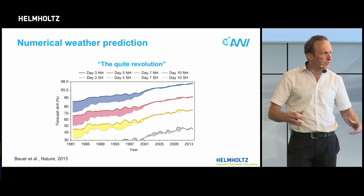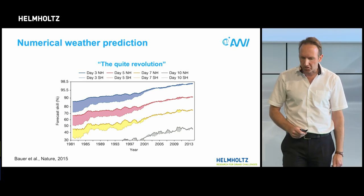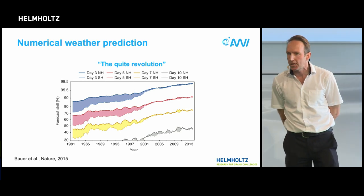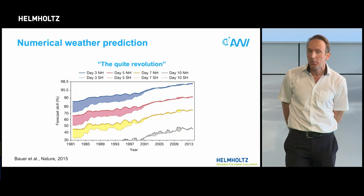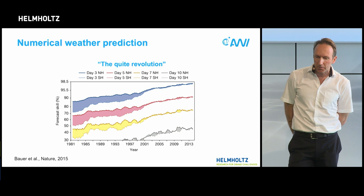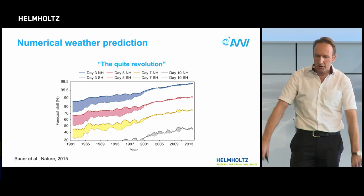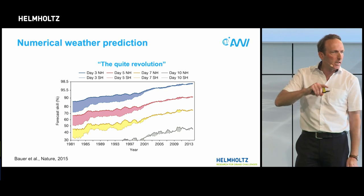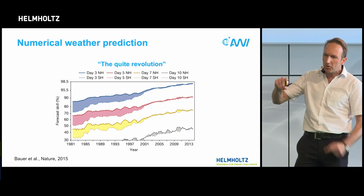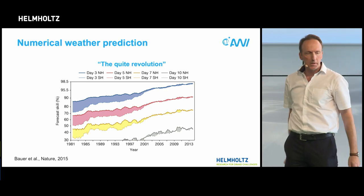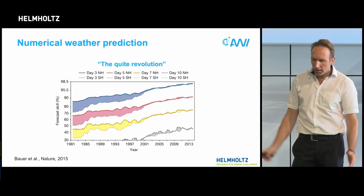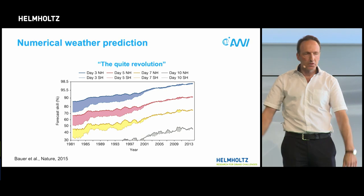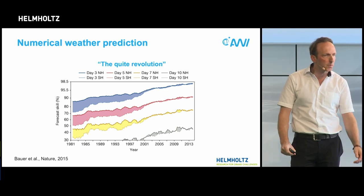There has been a story of success. This graph is from a paper by my colleague Peter Bauer — a Helmholtz International Fellow — who published a Nature paper entitled 'Numerical Weather Prediction: The Quiet Revolution.' It shows skill as a function of time, gradually and incrementally going up over the years. After 30 years of work and research, we have gained something like three days of skill in weather prediction.